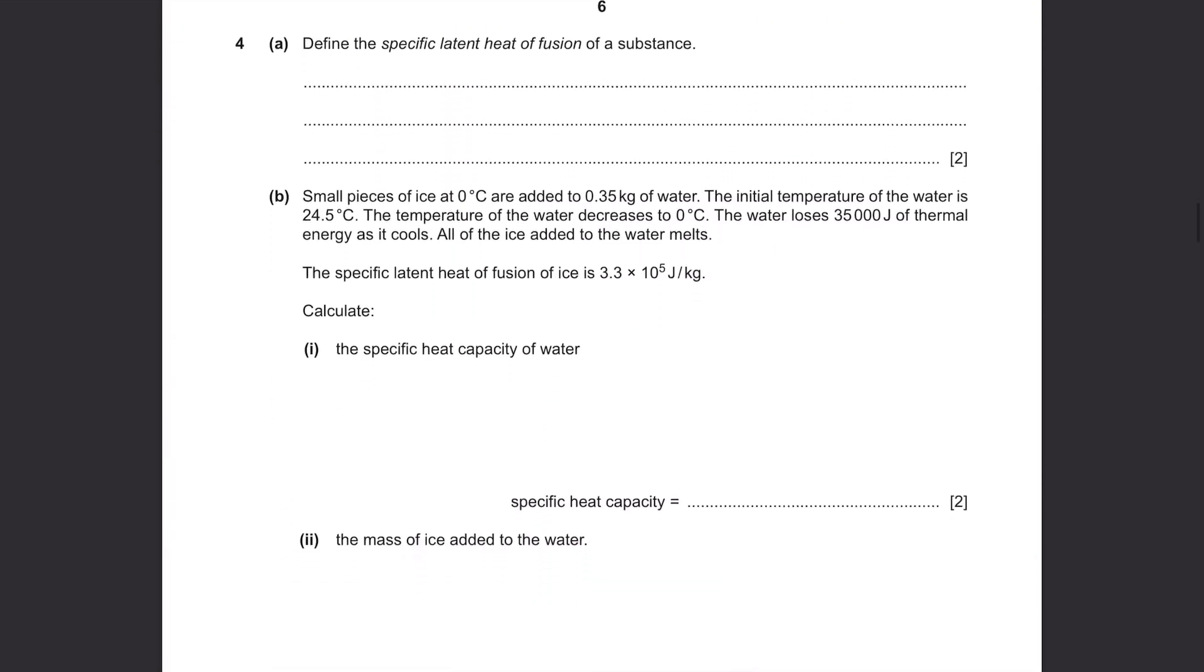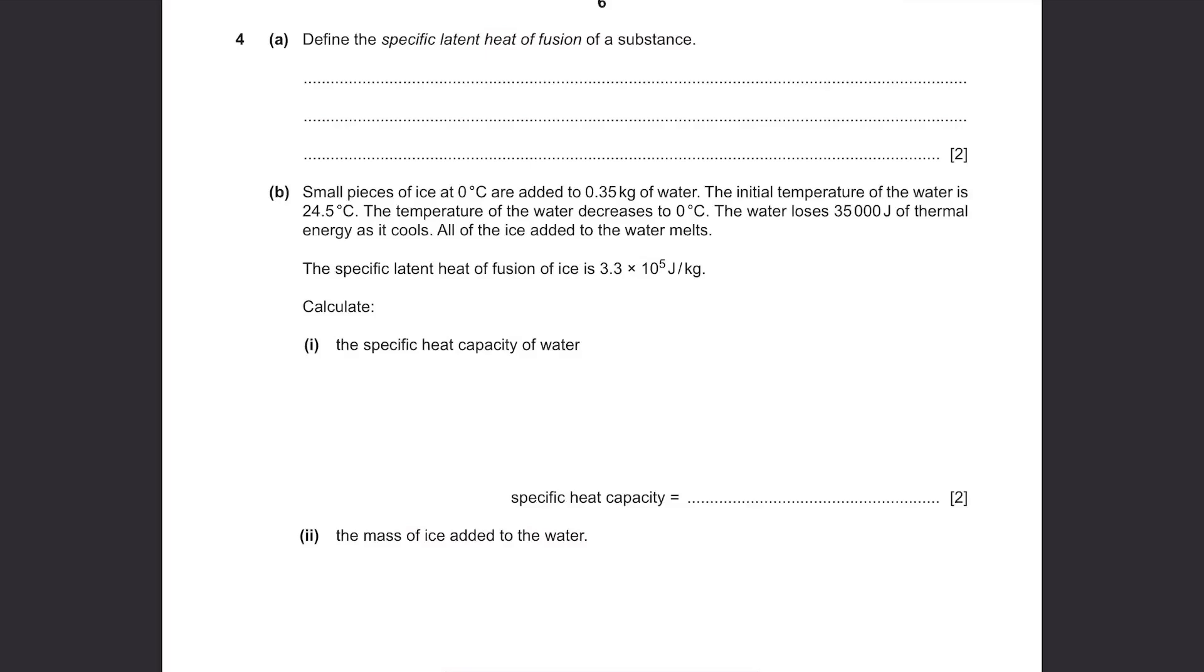Question 4, Part A. Define the specific latent heat of fusion of a substance. This is just definition. It's the thermal energy required to change a state, specifically to melt a solid per unit mass. Part B. Small pieces of ice at 0 degrees Celsius are added to 0.35 kg of water. The initial temperature of the water is 24.5 degrees Celsius. The temperature of the water decreases to 0 degrees Celsius. The water loses 35,000 joules of thermal energy as it cools. All of the ice added to the water melts. The specific latent heat of fusion of ice is 3.3 times 10 to the power of 5 joules per kilogram. Calculate the specific heat capacity of water.